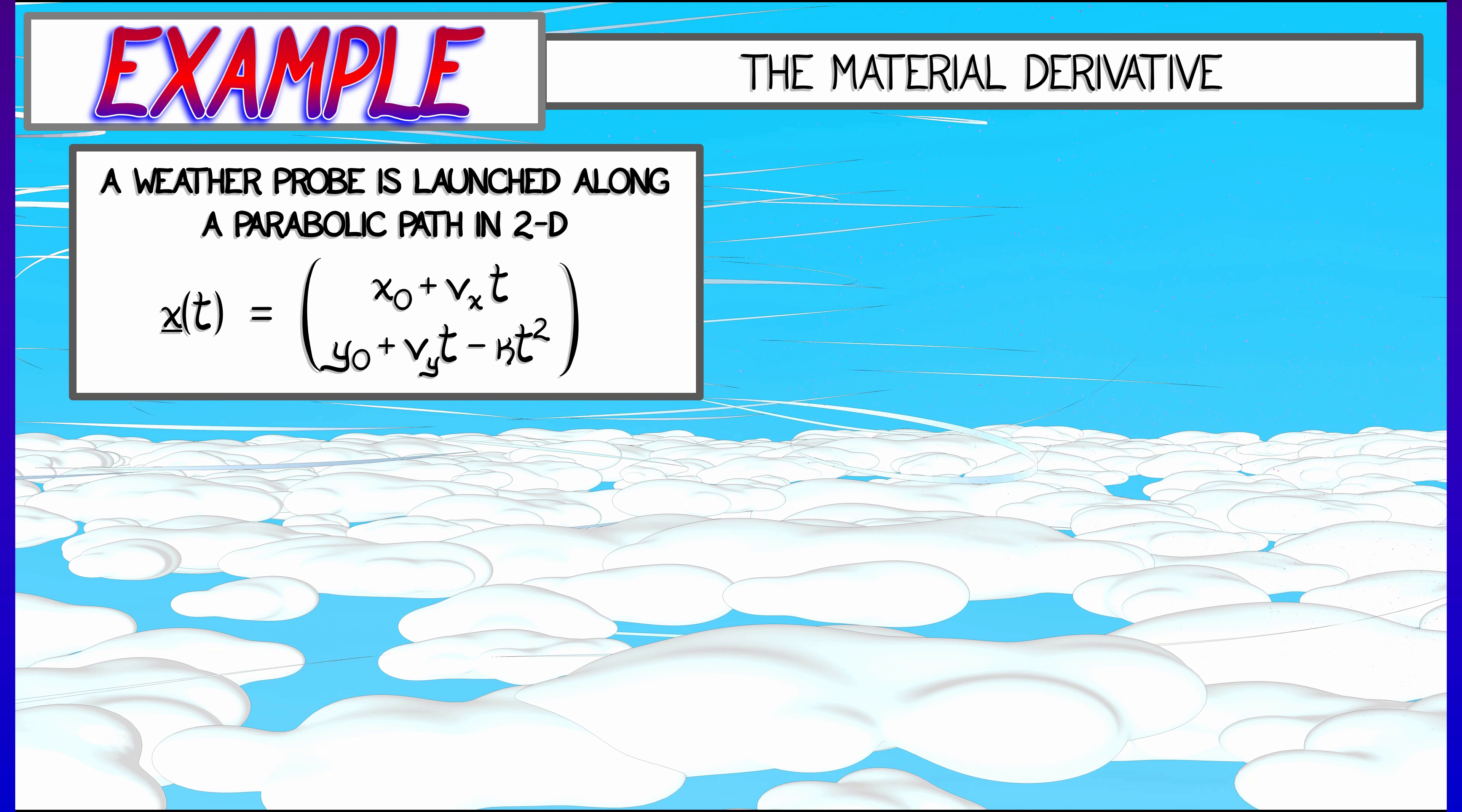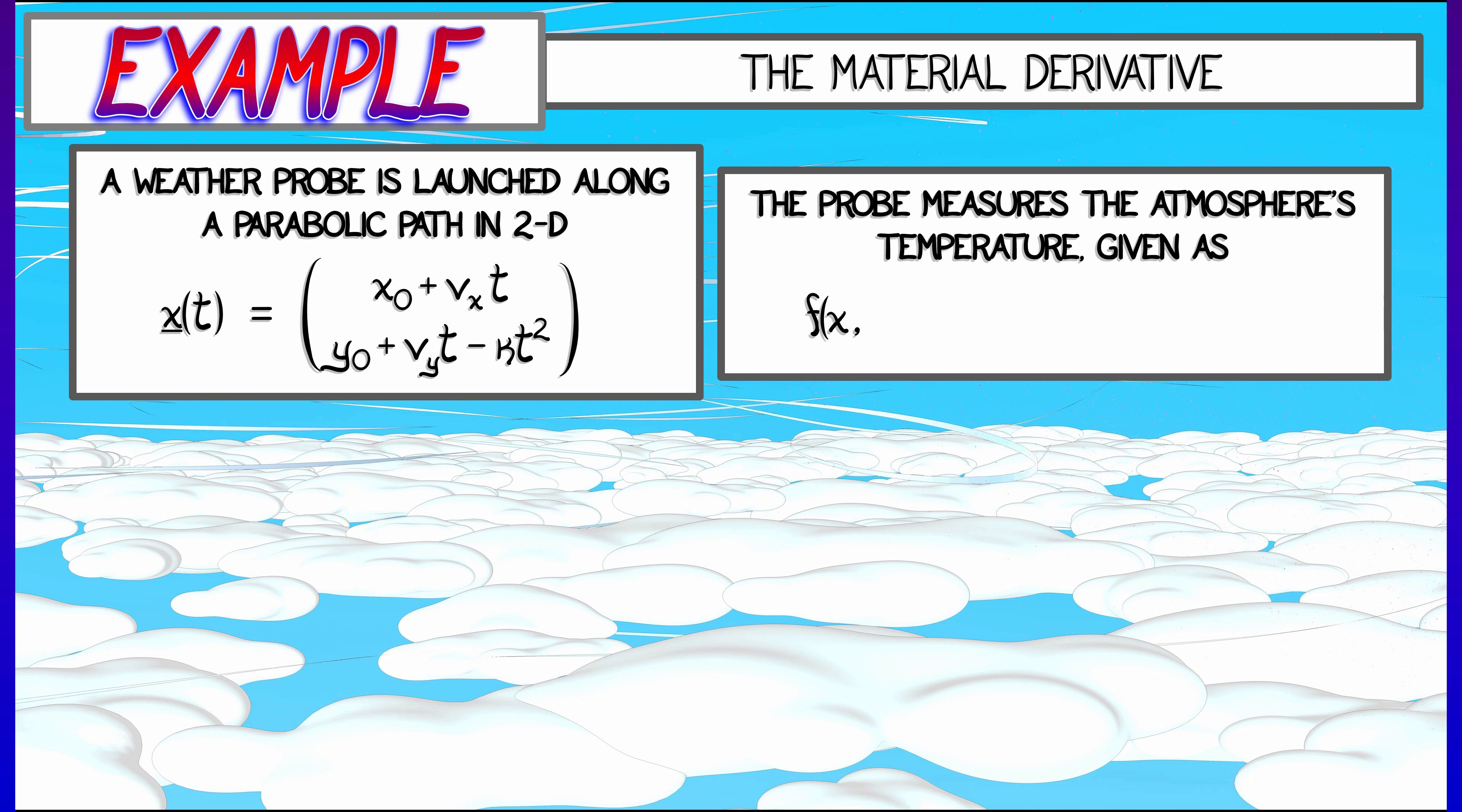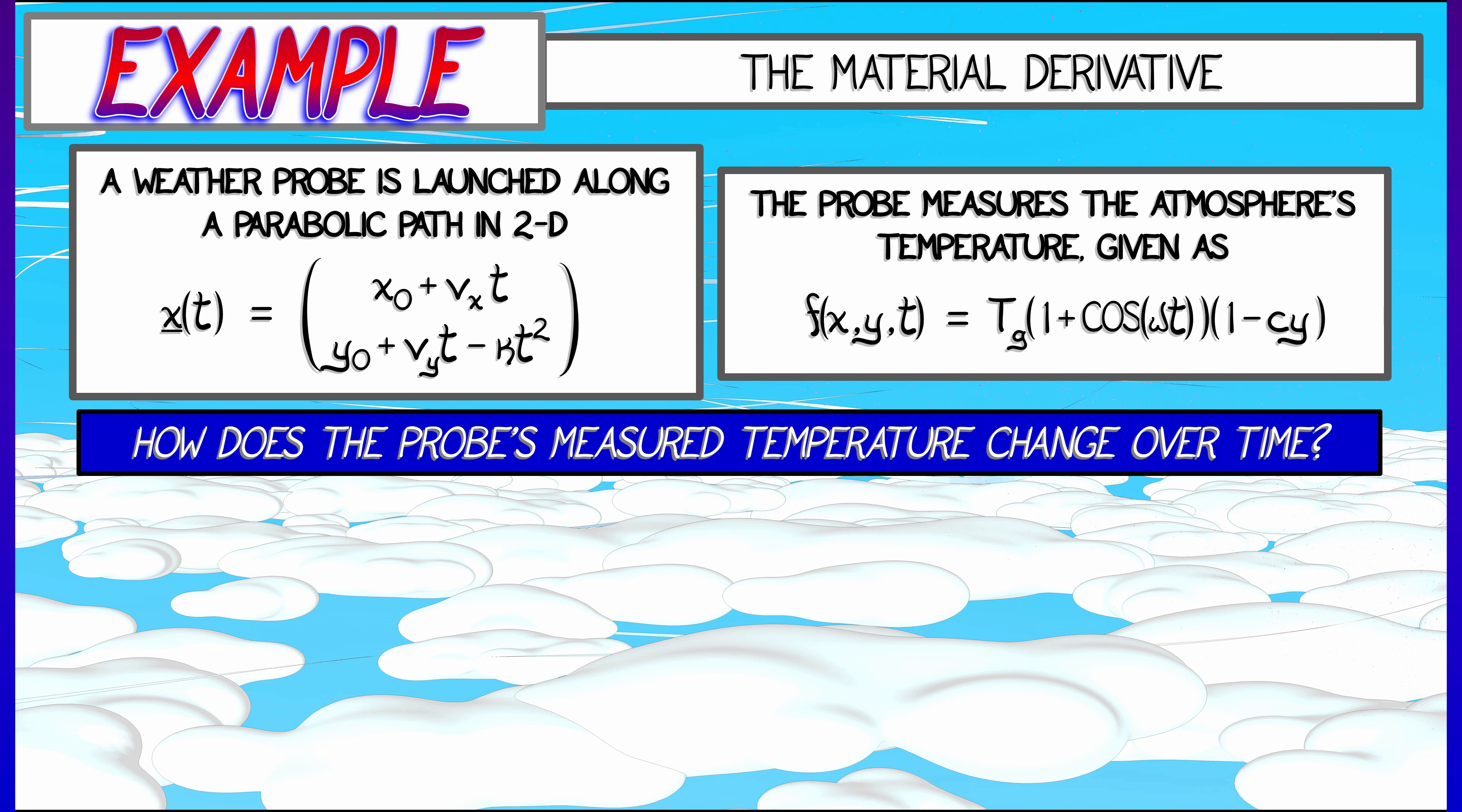Then what happens when we look at a temperature field that is also changing? Let's say there's some sort of time periodic component and then things vary according to the vertical component. Those are two different components here. How would you measure the rate of change of the temperature as experienced by that projectile, by that probe? How does that change over time?